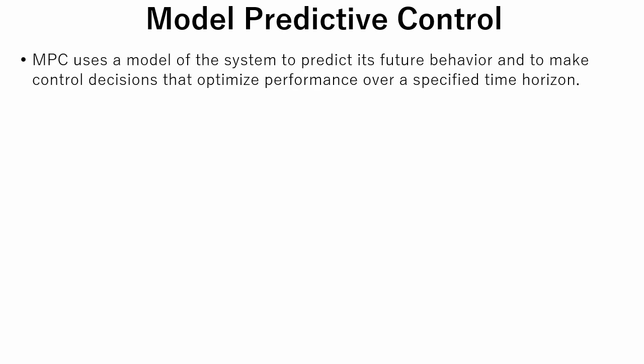Now let's see model predictive control. Model predictive control uses a model of the system to predict its future behavior and to make control decisions that optimize performance over a specified time horizon. So, in our case we should create a model of a vehicle.